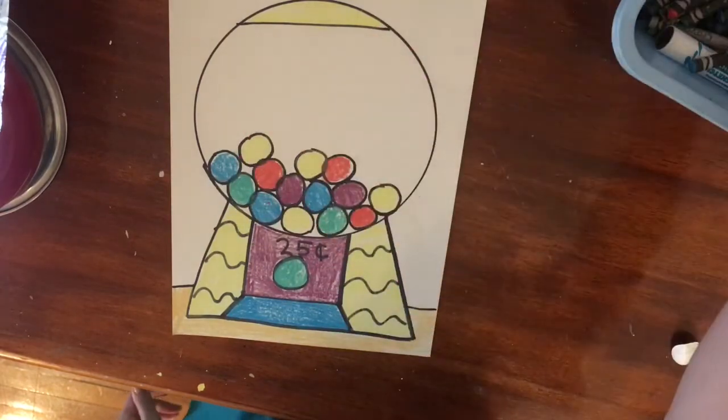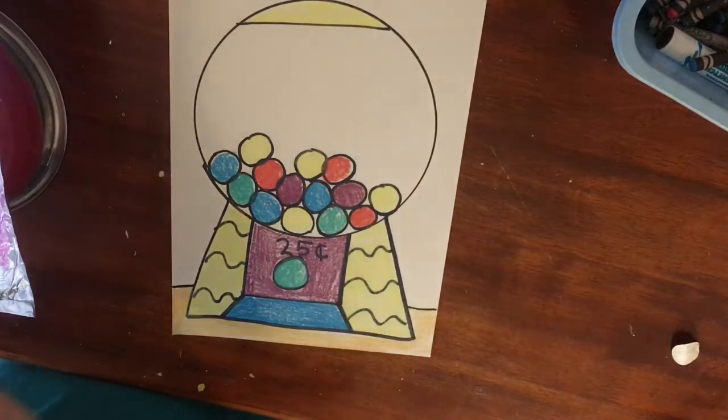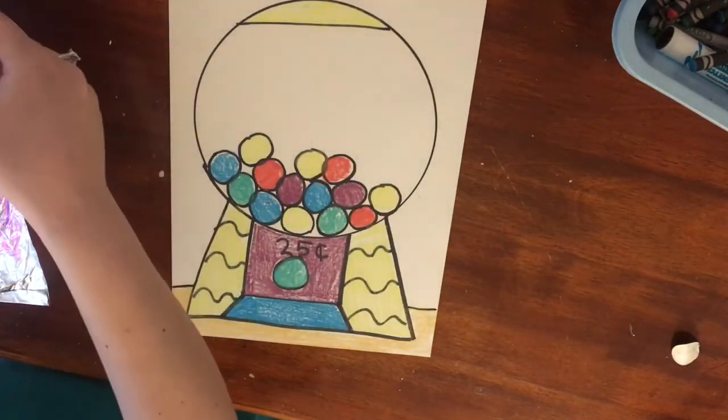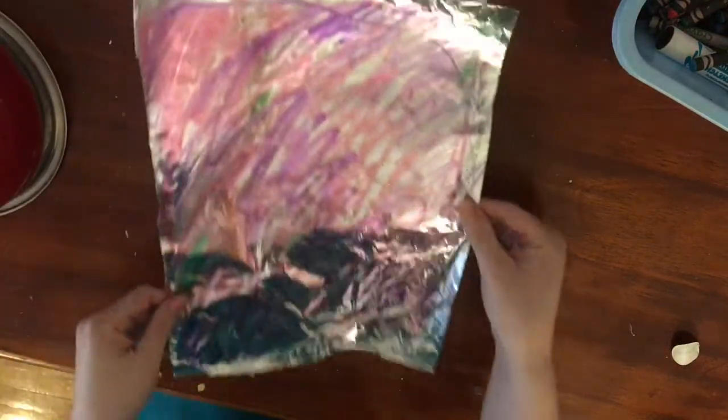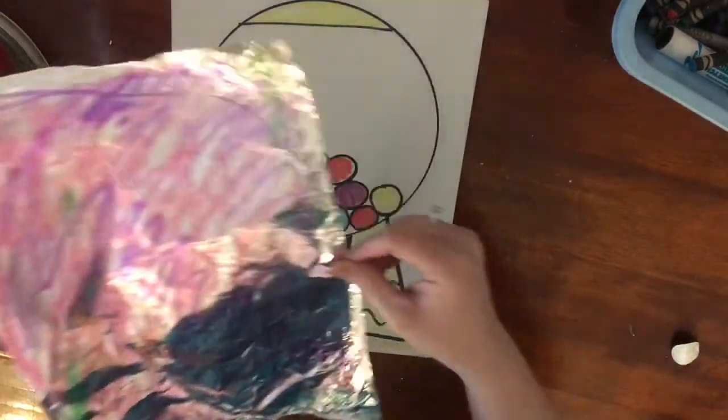So what you have to do first is get a piece of foil and trim it down to the size of your paper so you might need a parent's help for that. Most of us have foil at home so we should be able to do this.